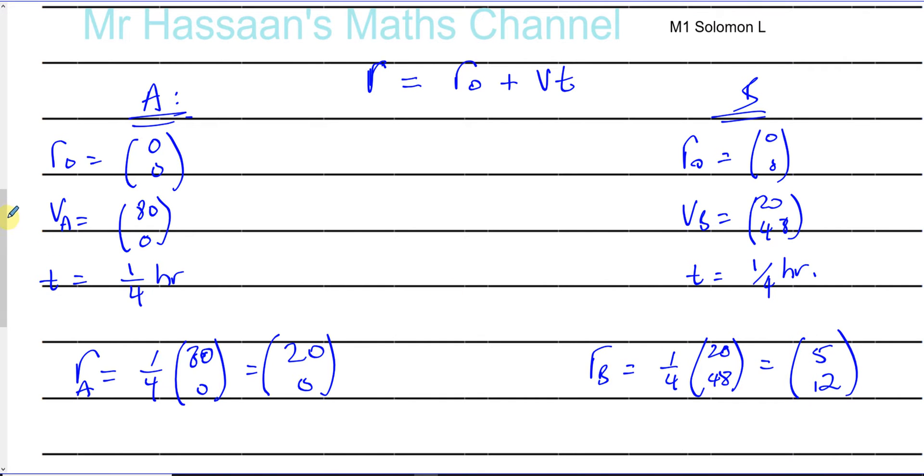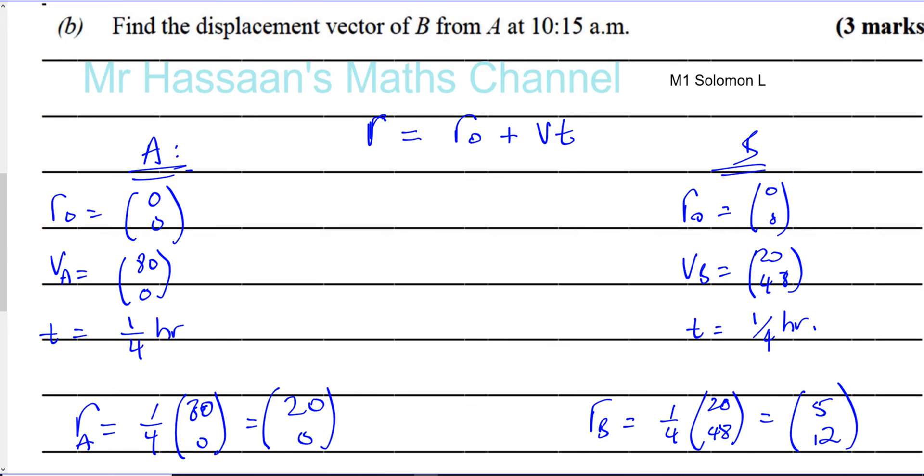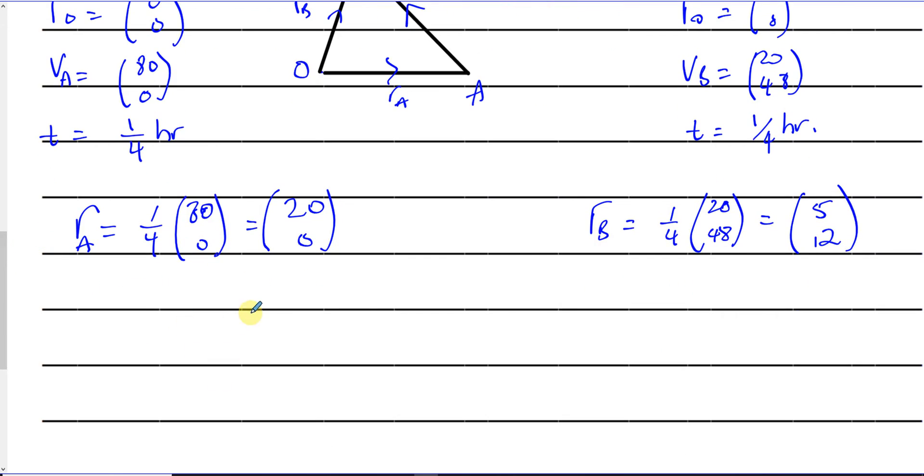So what they're asking us to find here, however, is the displacement vector of B from A. So let's just say we have O at this point here. A will be due east of it (20, 0) at that 10:15, and B will be at (5, 12), so somewhere up here. I'm just making a rough diagram. So A would be somewhere over here and B would be somewhere over there. This is RA and this is RB. And they want to find the vector of B from A. So B from A would be the vector taking you from A to B, which is going in this direction over here. So if I want to go from A to B, I've got to do minus RA plus RB, which is the same as RB minus RA. So what they want us to find is RB minus RA, which is (5, 12) take away (20, 0), which gives us 5 minus 20, which is negative 15, and 12 minus 0, which is 12.